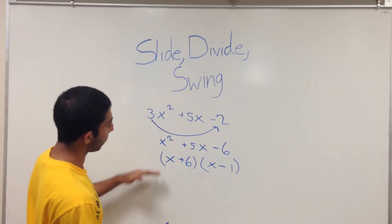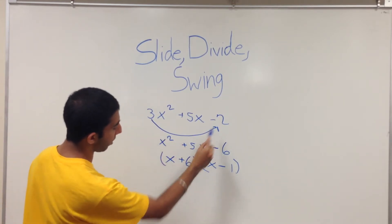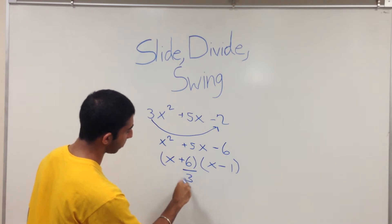Now you will bring 3 down. Since you multiplied it with the constant, you will bring it down and you will divide it.